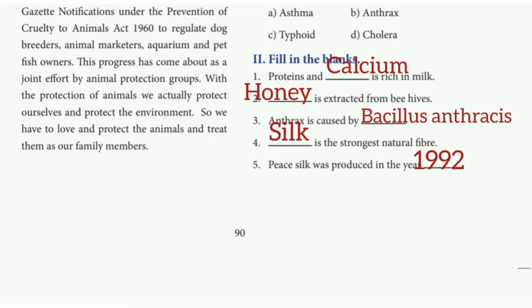Fill in the blanks. First one: protein and calcium is rich in milk — the answer is calcium. Second one: honey is extracted from beehives — the answer is honey. Third one: anthrax is caused by Bacillus anthracis — the answer is Bacillus anthracis.